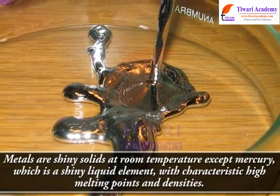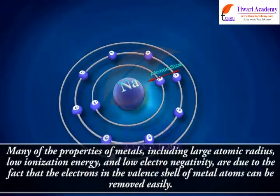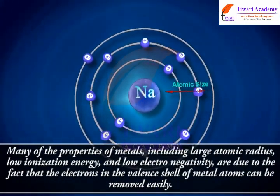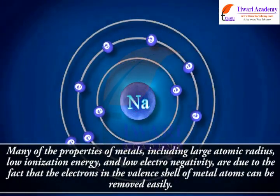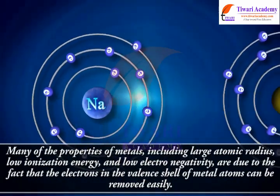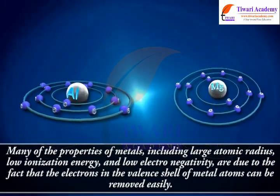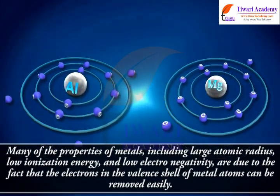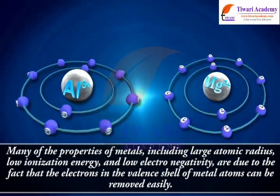Many of the properties of metals, including large atomic radius, low ionization energy, and low electronegativity, are due to the fact that the electrons in the valence shell of metal atoms can be removed easily.